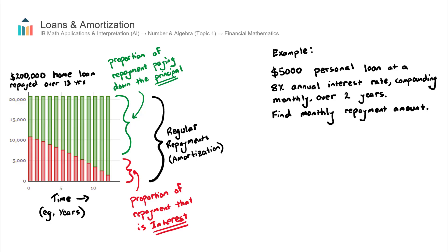Now that we've covered the concept of a reduced balance loan — and to recap, the process of repaying it is called amortization — let's go through a simple example. There are many ways these questions can be asked, so I recommend practicing lots in the question bank. I'll show you how to solve it using the finance solver, otherwise known as the TVM solver, on the calculator.